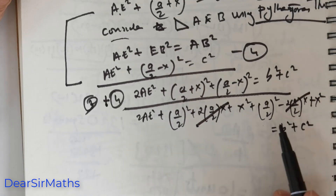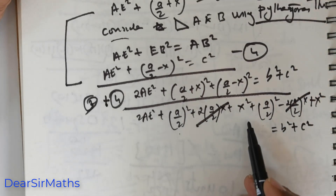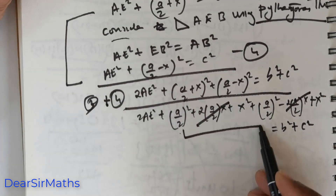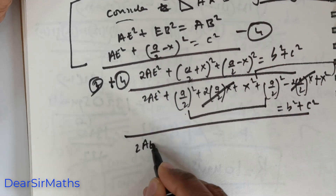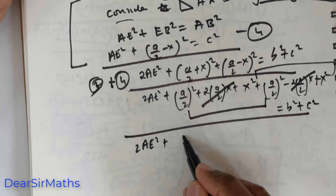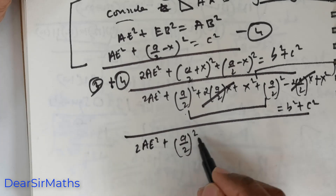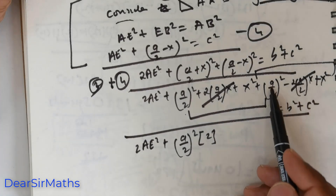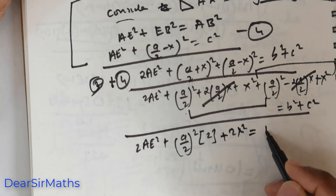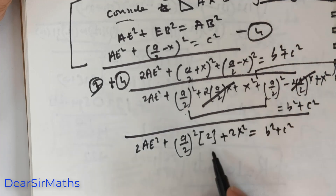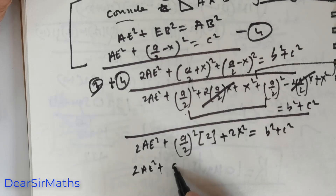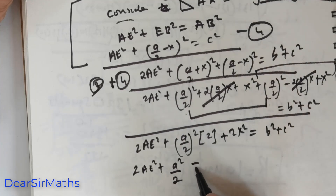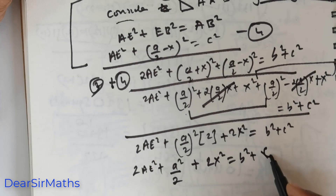The cross terms cancel out. So adding everything up, you get 2 times AE squared plus 2 times (A over 2) squared plus 2 times X squared equals B squared plus C squared. Simplifying the middle term by cancelling a 2, you get 2 times AE squared plus A squared over 2 plus 2 times X squared equals B squared plus C squared.